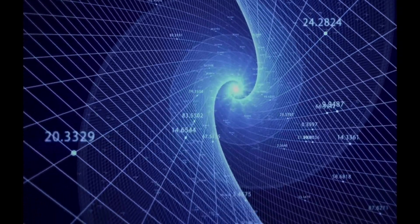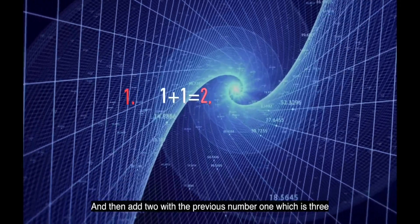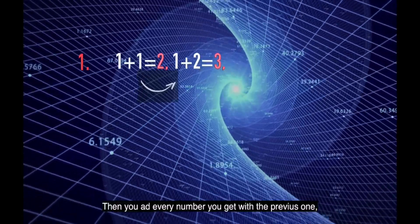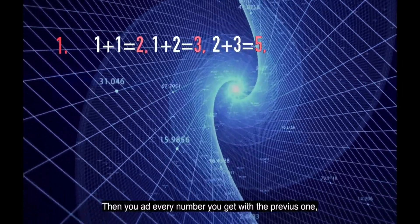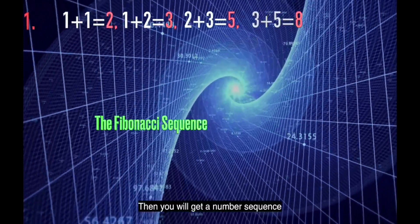If you take the number one, add one which is two, and then add two with the previous number one which is three, then you add every number you get with the previous one, then you will get a number sequence: the Fibonacci sequence.